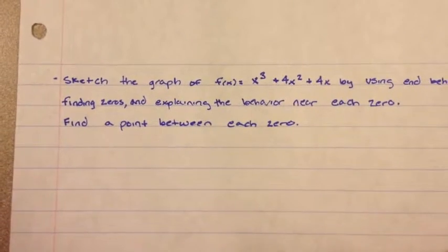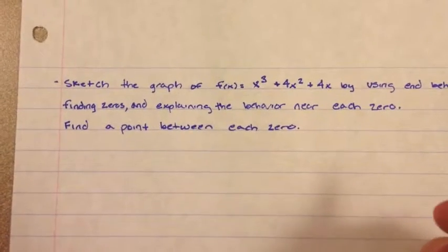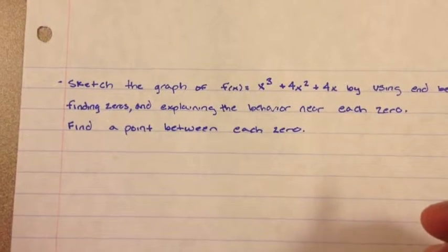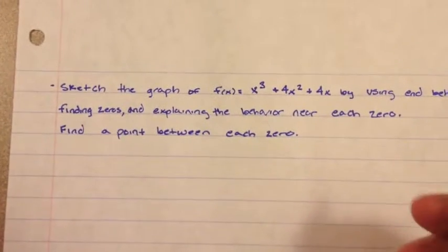The question wants us to sketch the graph by using end behavior, finding zeros, and explaining the behavior near each zero, and it wants us to find a point between each zero.